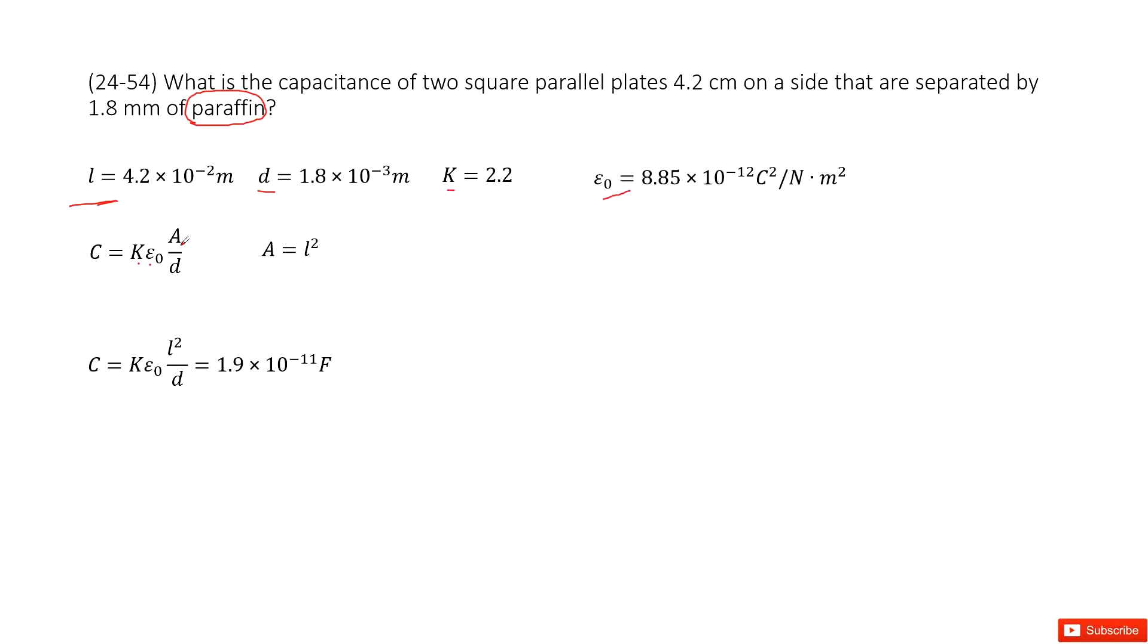And the A is l squared, right? The side length squared, and divided by d. d is given. So now we input all the given quantities and get the answer there. Thank you.